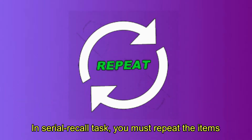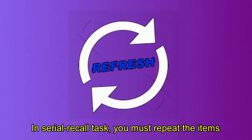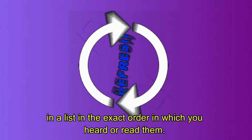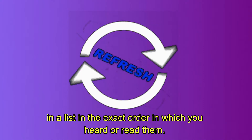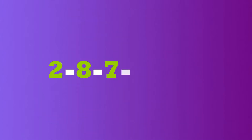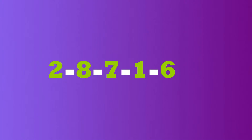In a serial recall task, you must repeat the items in a list in the exact order in which you heard or read them. For example, if you were shown the digits 2, 8, 7, 1, 6, 4, you would be expected to repeat them in exactly that order: 2, 8, 7, 1, 6, 4.